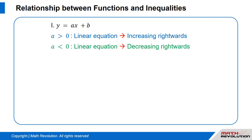When a is smaller than 0 — when a is negative — the linear equation will result in a line decreasing as we move rightwards.